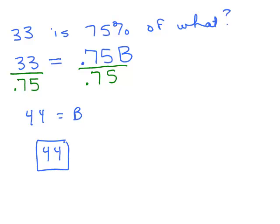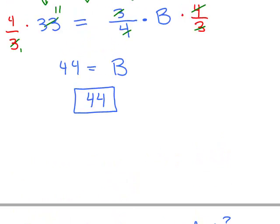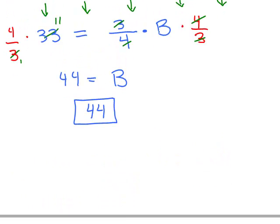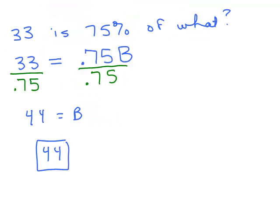If you're not allowed to use a calculator, it's really easier to write it as a fraction and multiply by the reciprocal. Just take a quick look up here. When I wrote it as 3/4, see how nicely it all worked out? I had 3/4 times B. If I multiply by 4/3, the 3 canceled into the 33. The arithmetic was pretty simple.